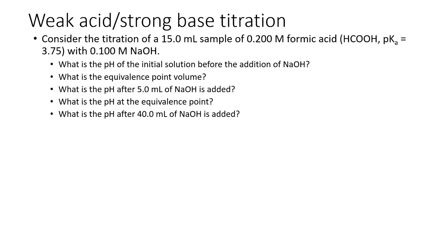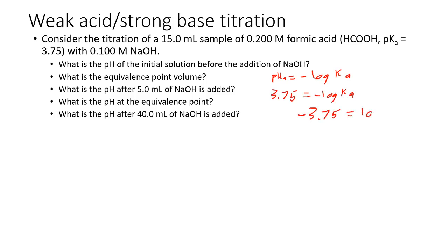As a reminder, if you want to know the pH of a weak acid, you're going to have to use an ice table. To use your ice table effectively, you need the concentration of the acid and the Ka. This problem gave us a pKa, so let's start by converting that to a Ka. pKa equals negative log of Ka, so we plug in 3.75. Moving the negative to the other side gives negative 3.75 equals log of Ka. Raising 10 to the power for both sides, we get Ka equals 10 to the negative 3.75, which equals 1.78 times 10 to the negative 4th.